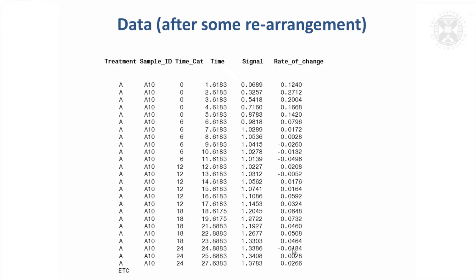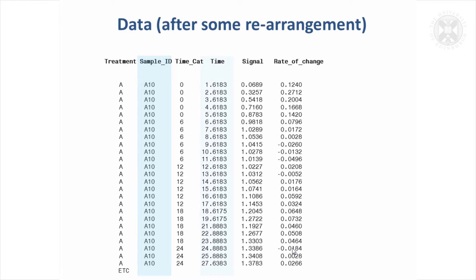This is the data after some manipulation — I won't go into how it was manipulated just now. We've got a code, sort of A, B, C, D for treatments. This is just the first bit of the data set; it's a very large data set. We have the ID for the sample — that's the sample that's taken. Time is categorized, so we've got these time measurements which are very exact. There's lots of them.